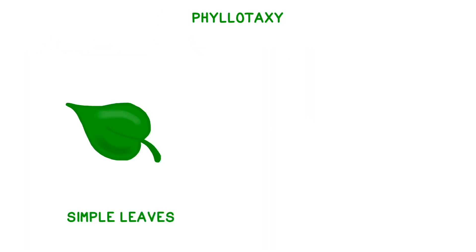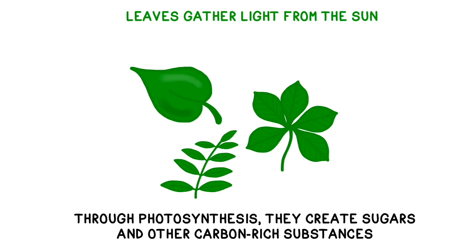There are two major types of leaves, simple and compound. They both gather light from the sun so plants can form sugars and other carbon-rich compounds through photosynthesis.